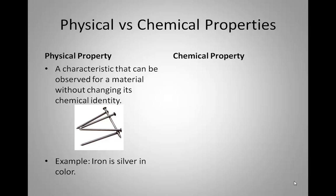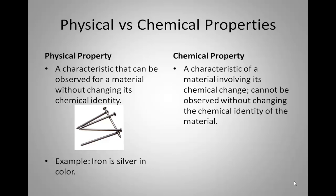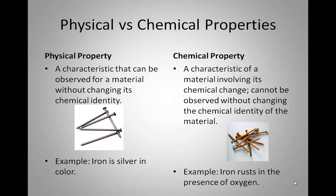A chemical property, on the other hand, is a characteristic of a material involving its chemical change. This cannot be observed without changing the chemical identity of the material. So if you take those same silver nails and let them sit outside for a while, exposed to the elements, they're going to start to rust. Iron rusts in the presence of oxygen — that rust is a sign of a chemical change. You'll notice it's gone from a shiny silver color to a rough orangey-brown substance. It is no longer iron.